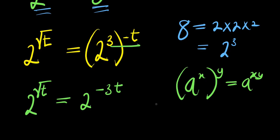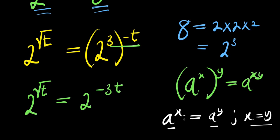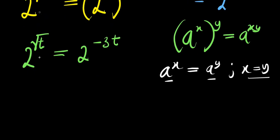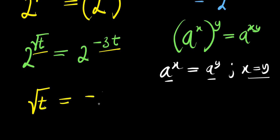Consider this also: if you have a to the power x equals a to the power y, when the bases are the same, you compare the exponents and get x equals y. So right now, the left exponent is square root of t and the right is negative 3t. We have: square root of t equals negative 3t.